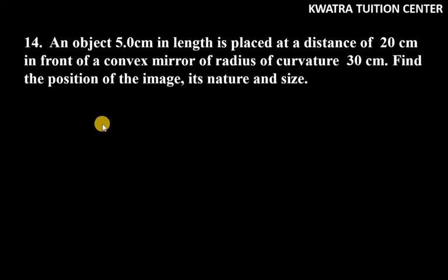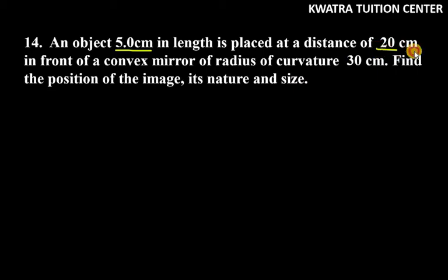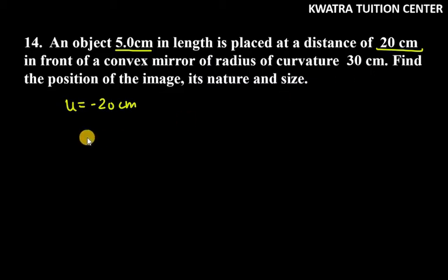Let's start with question number 14. An object 5 cm in length — that is the height — is placed at a distance of 20 cm in front of a convex mirror. So object distance u is minus 20 cm. The radius of curvature r is given as 30 cm.